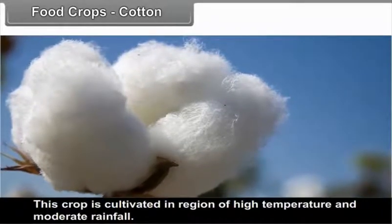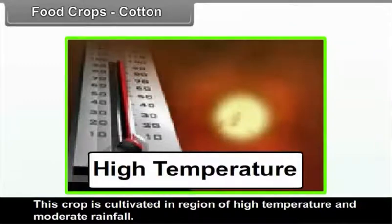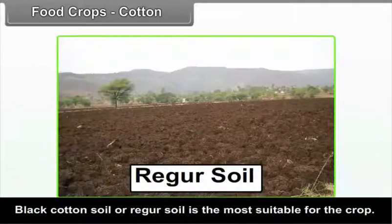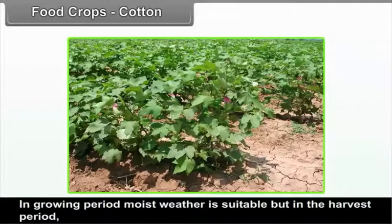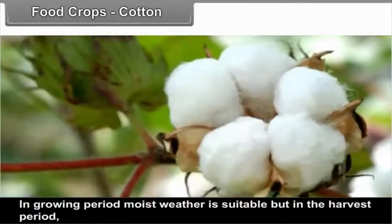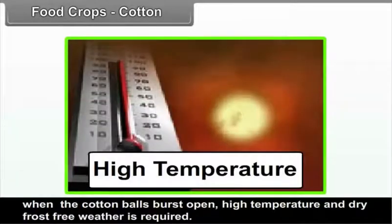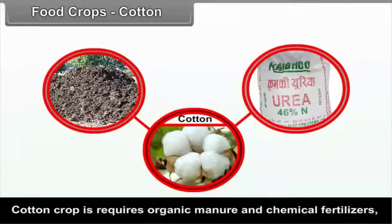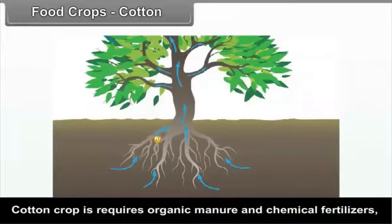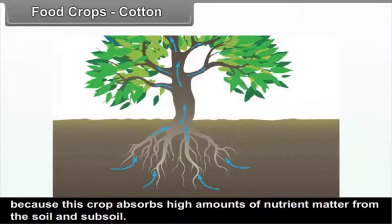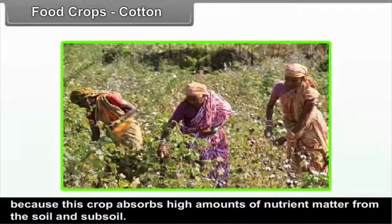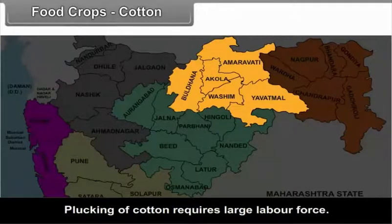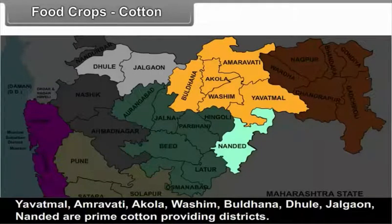Cotton is cultivated in regions of high temperature and moderate rainfall. Black cotton soil (regur soil) is the most suitable. In the growing period, moist weather is suitable, but during harvest, when cotton balls burst open, high temperature and dry frost-free weather is required. Cotton requires organic manure and chemical fertilizers as it absorbs high amounts of nutrients from the soil. Plucking cotton requires a large labor force. Yavatmal, Amravati, Akola, Vashim, Buldhana, Dhule, Jalgao, and Nanded are prime cotton-producing districts.